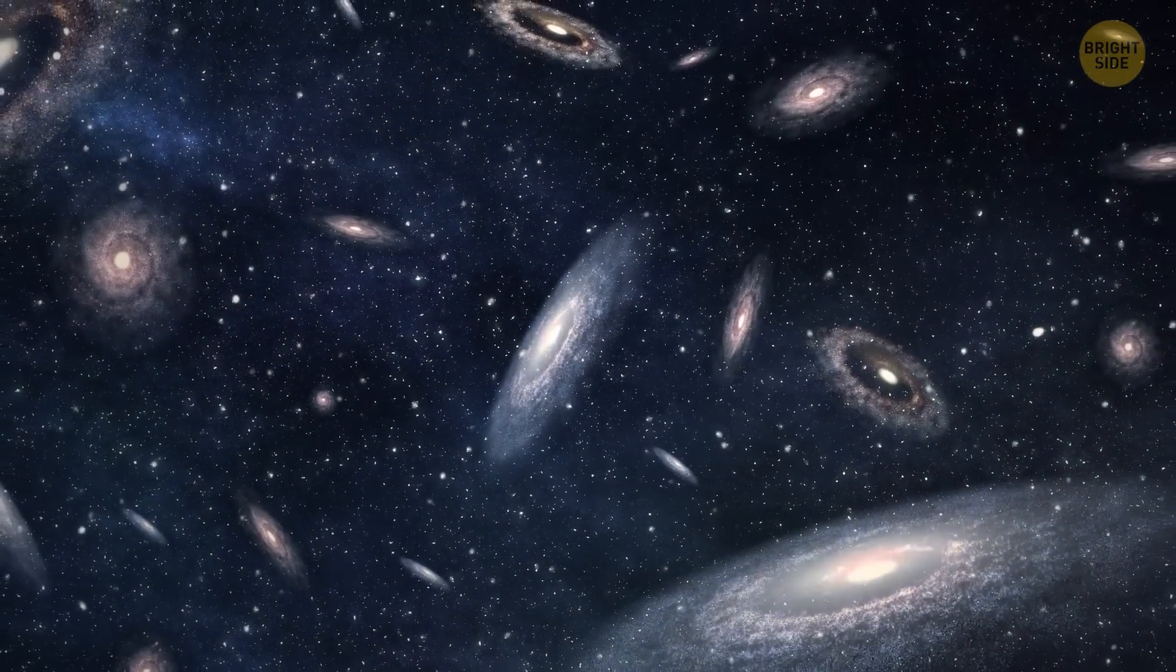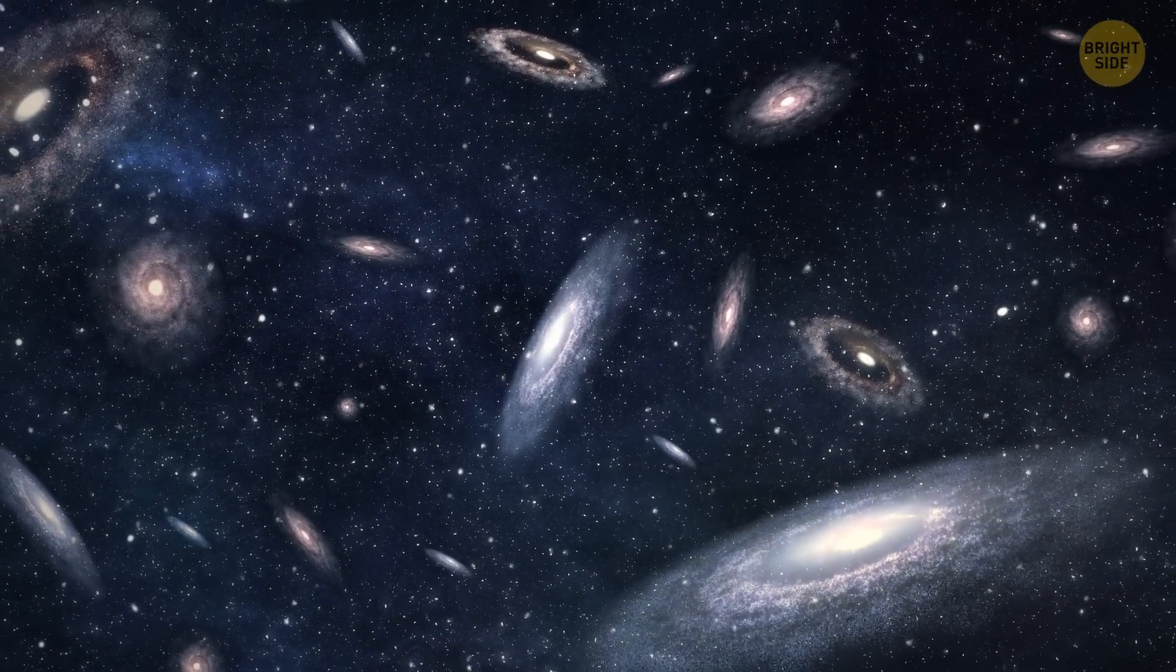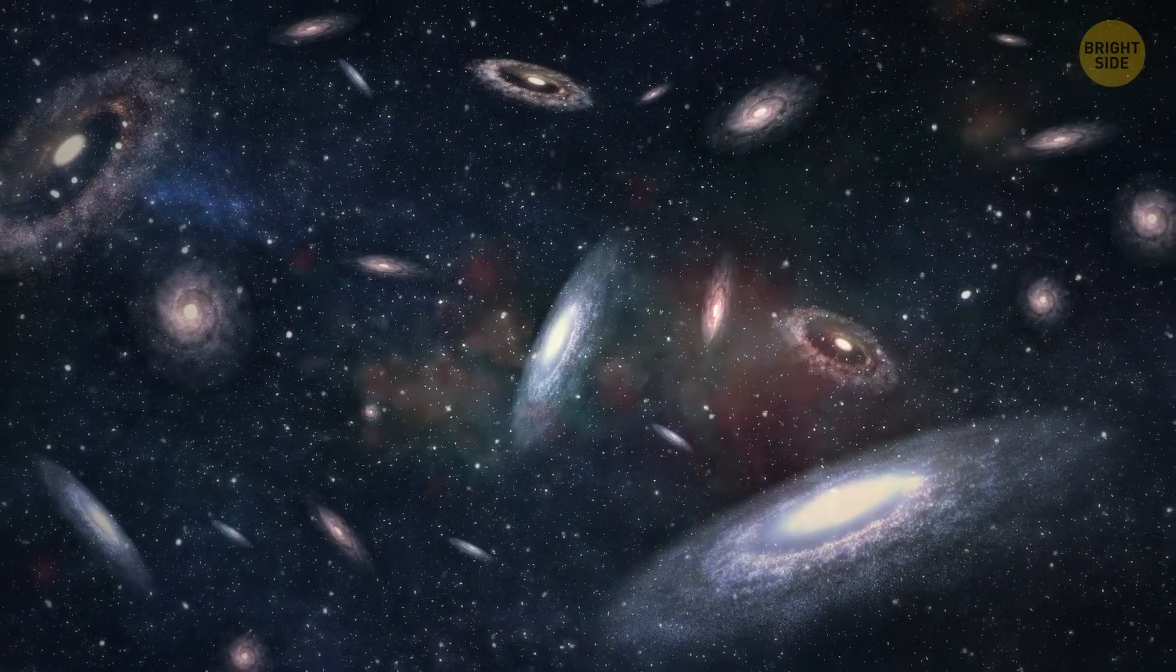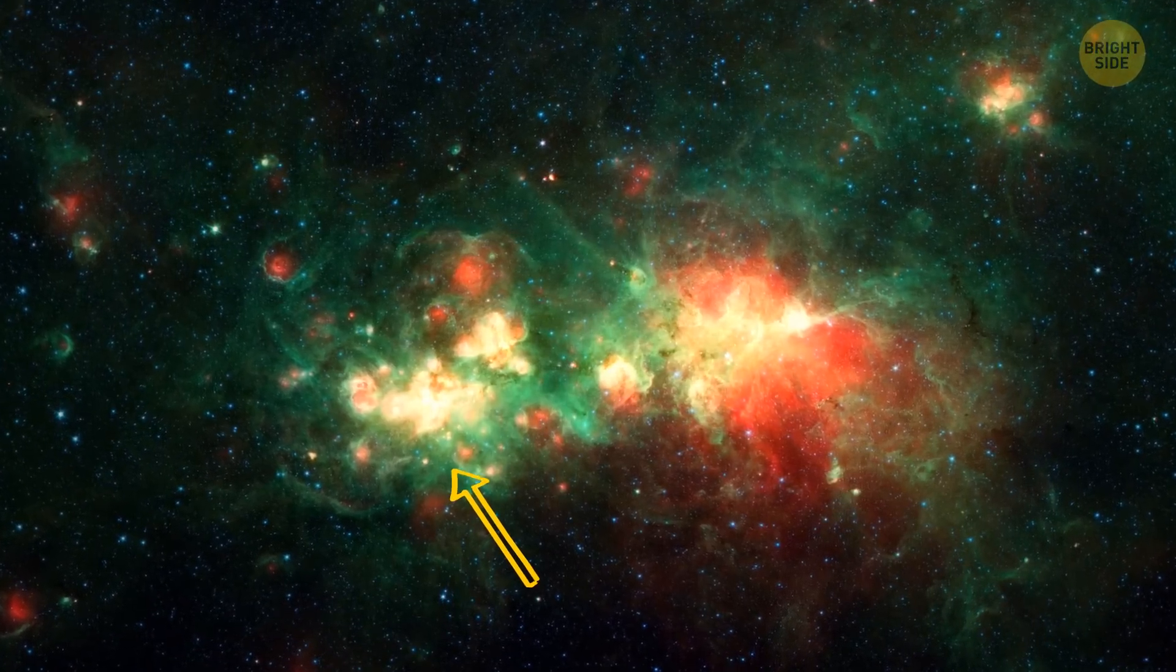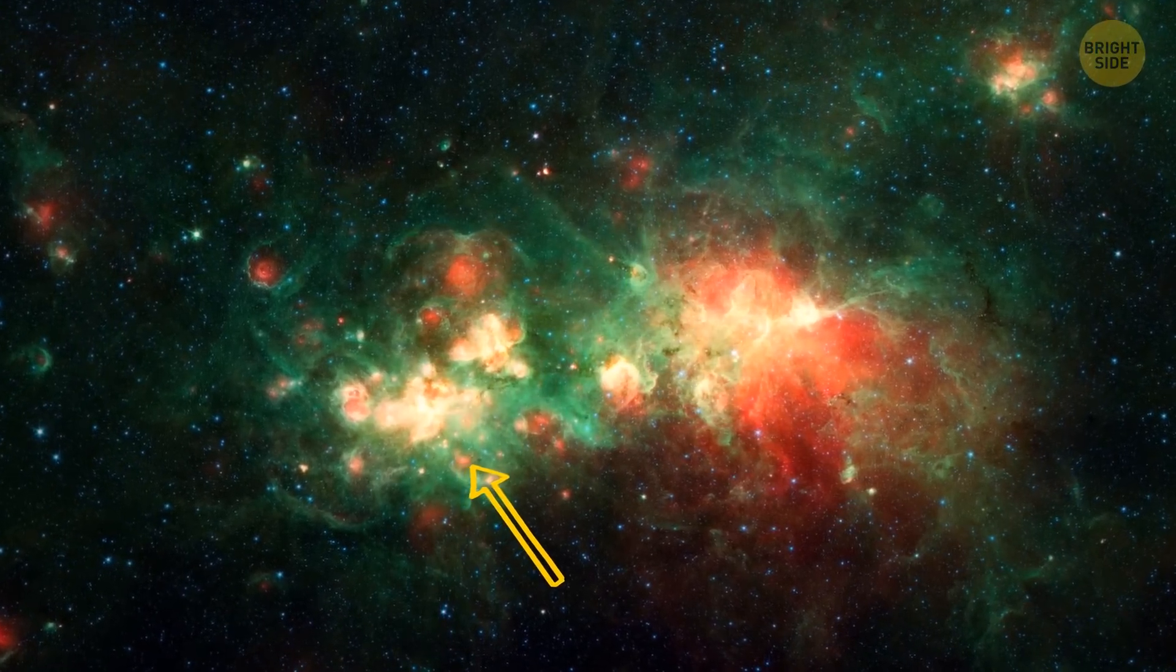Galaxies are like big families of stars, and there's an interesting pattern you can see all over the universe. The biggest galaxies stop making new stars, while the smaller ones keep creating them all the time.